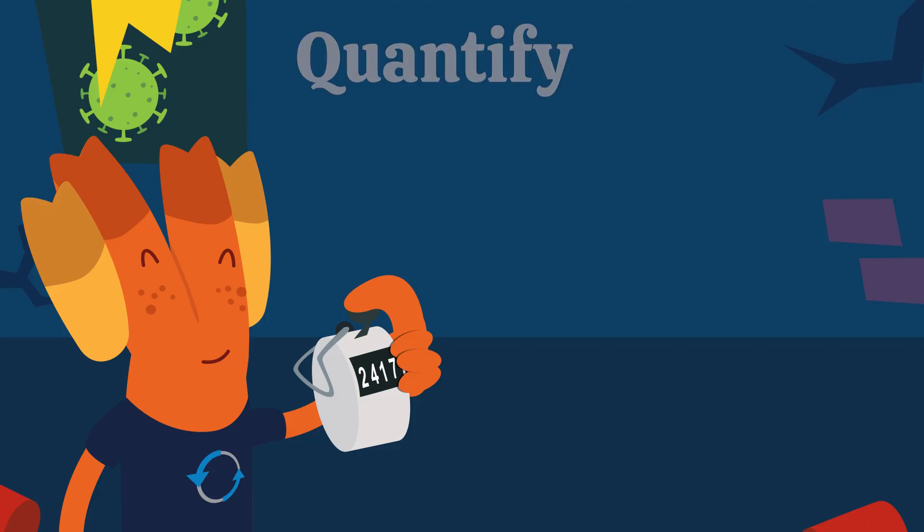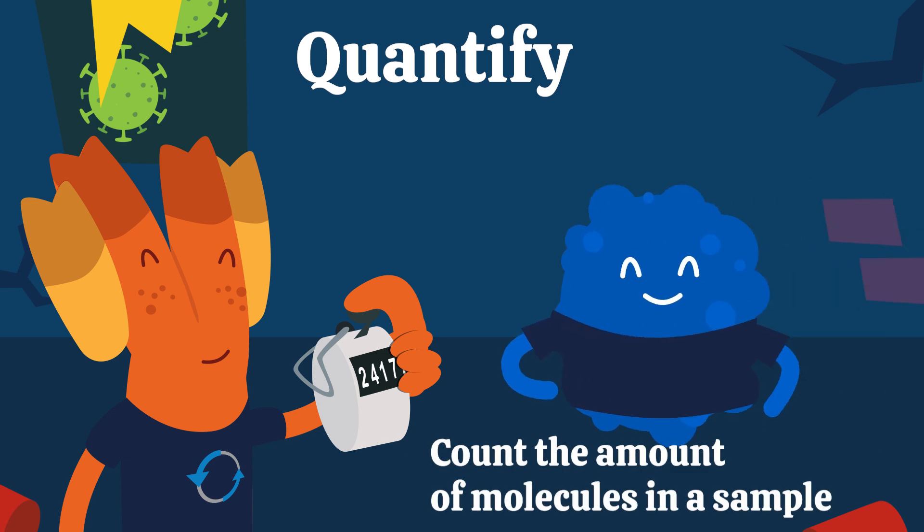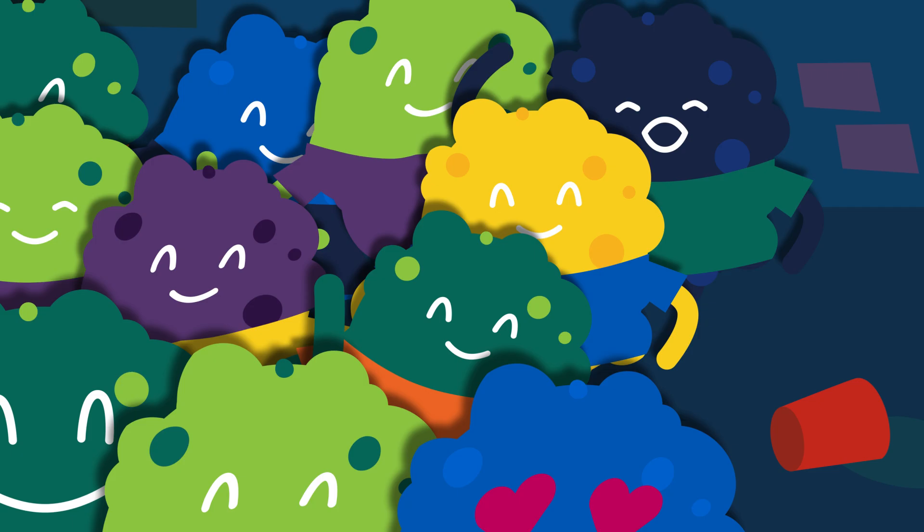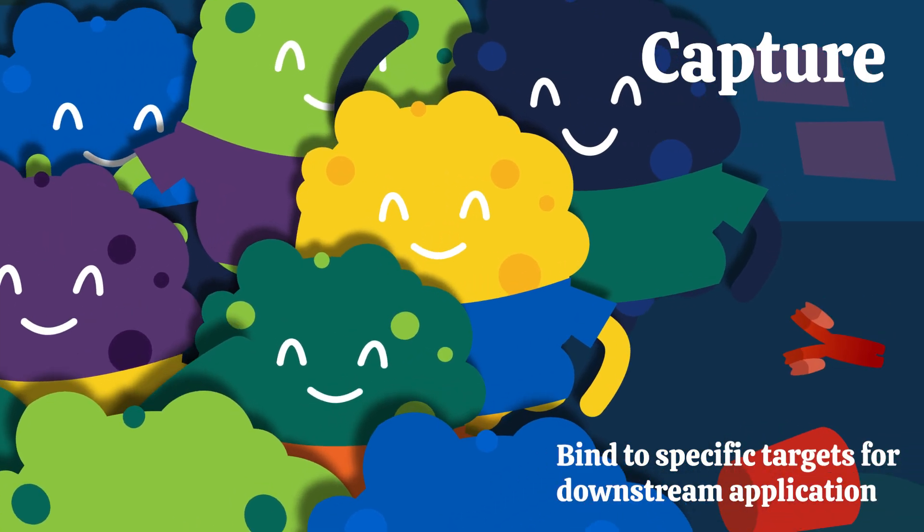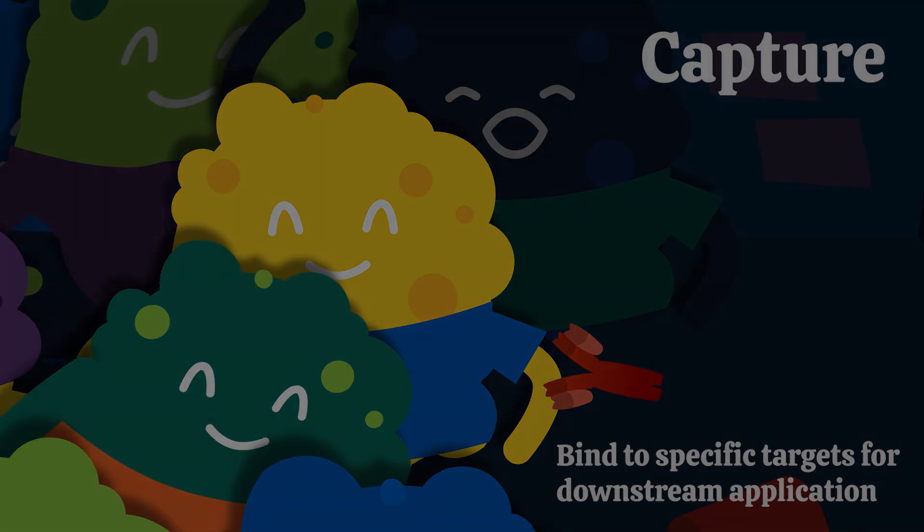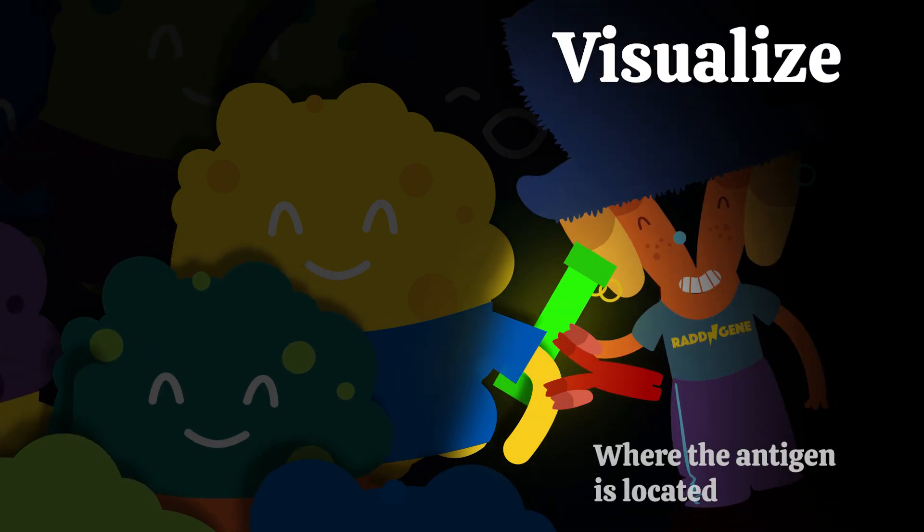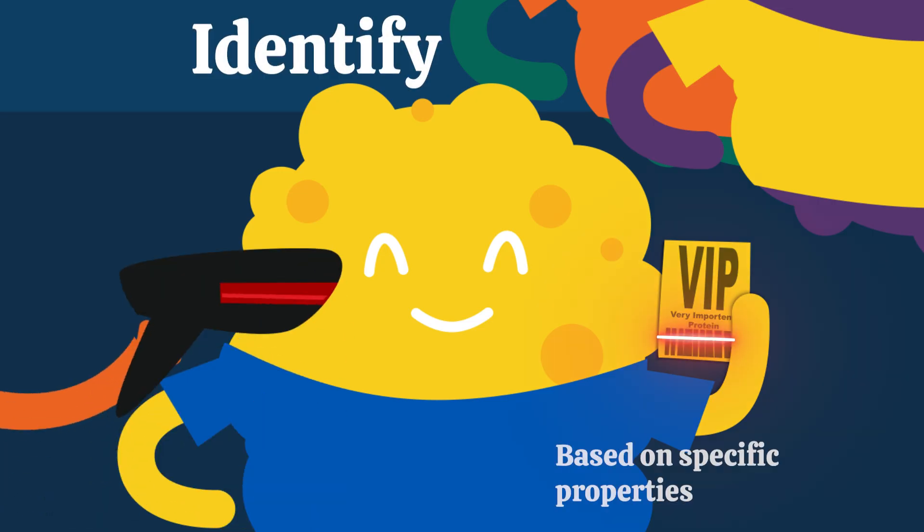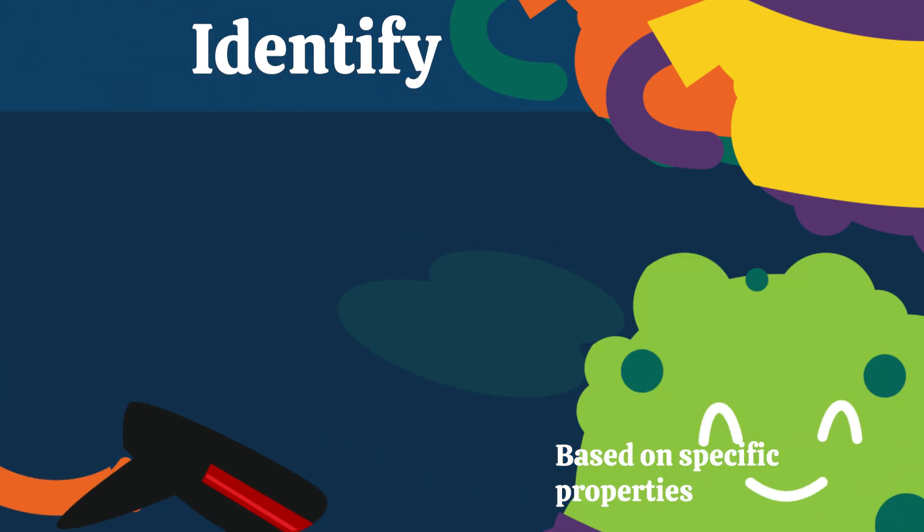Scientists use antibodies to quantify or count the amount of proteins or other small molecules in a sample, capture or bind to specific targets for downstream application, visualize where the antigen is located, and identify samples based on specific properties.